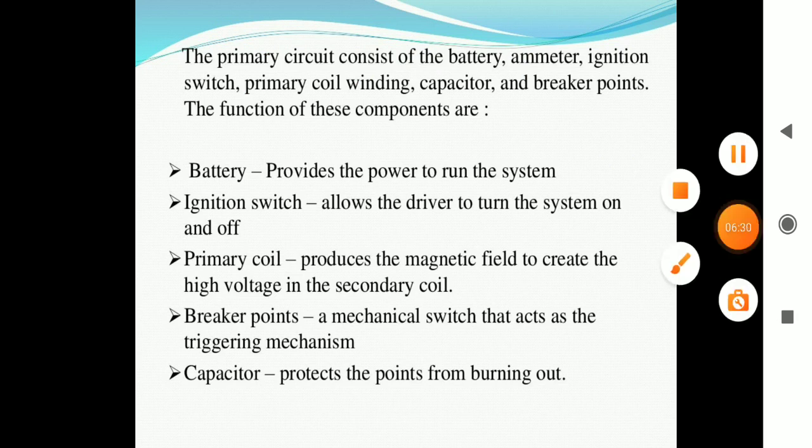The primary coil produces the magnetic field to create high voltage in the secondary coil. The breaker point provides a vital role as a mechanical switch that acts as a trigger in the mechanism. On the acting of breaker point, the circuit gets on or off. The capacitor protects the points from burning out.